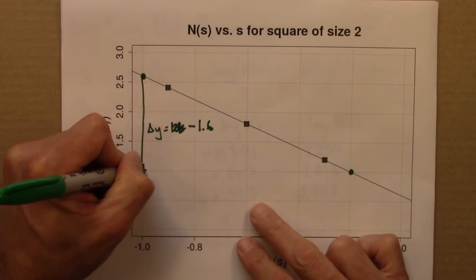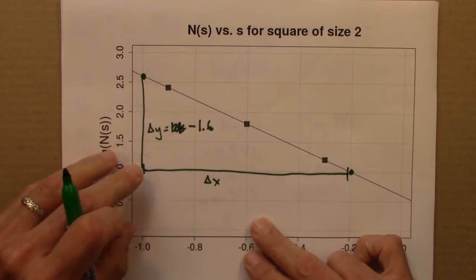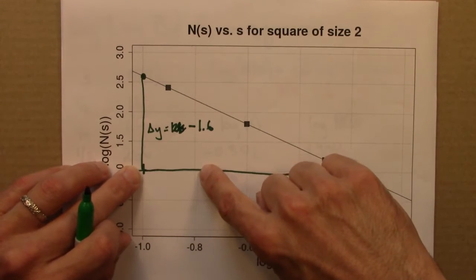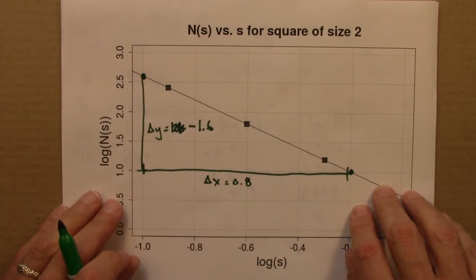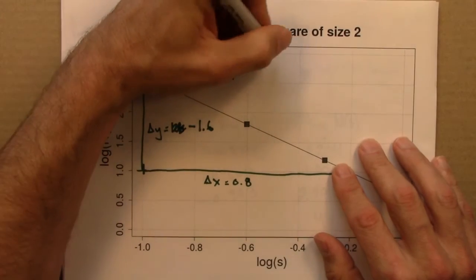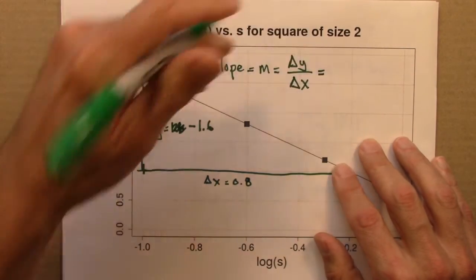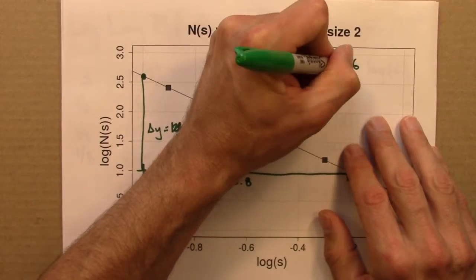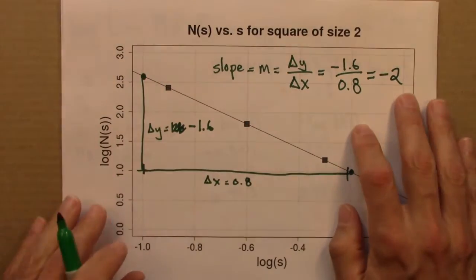What about delta x? The distance in the x direction is 0.2468 is going to be 0.8. So the slope of this line is m, rise over run, delta y over delta x. Let's plug in. Minus 1.6 over 0.8. Sure enough, that's minus 2.